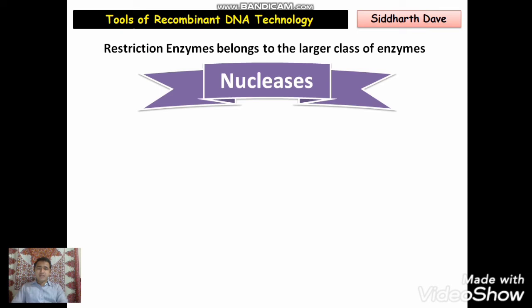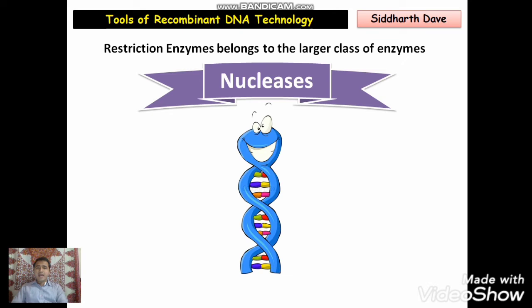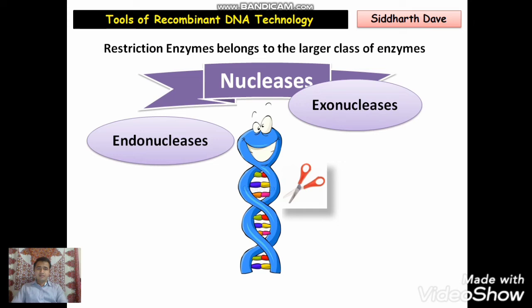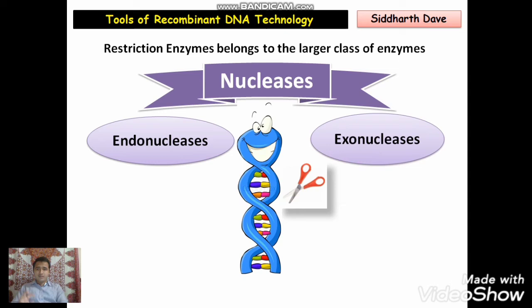These restriction enzymes belong to the larger class of enzymes called nucleases, because they have the ability to make a cut on a nucleic acid, that is DNA. There are two types of nuclease enzymes — the first is endonucleases and the other is exonucleases.